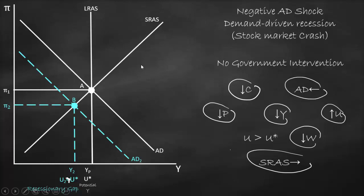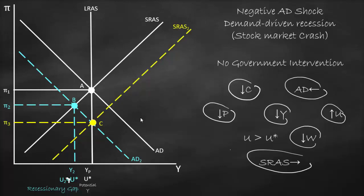The new equilibrium is found at the intersection of the long-run aggregate supply curve and aggregate demand 2, which is point C. The short-run aggregate supply curve shifts right to pass through point C, and here we reach full employment output at the natural rate of unemployment, with a lower inflation rate — inflation level 3. This process happens gradually over many years, so in reality the short-run aggregate supply curve shifts many times before reaching this final equilibrium.